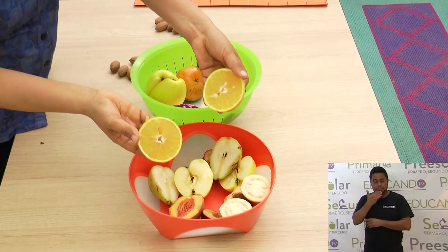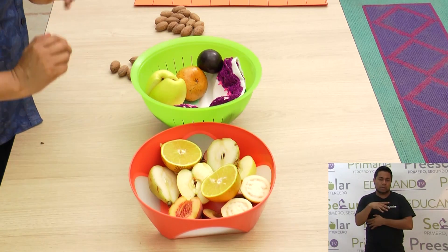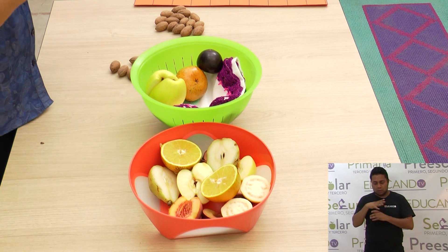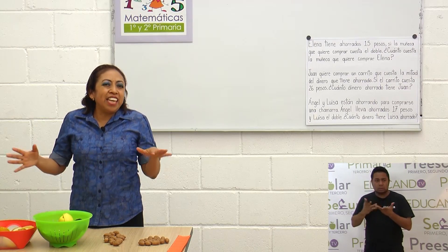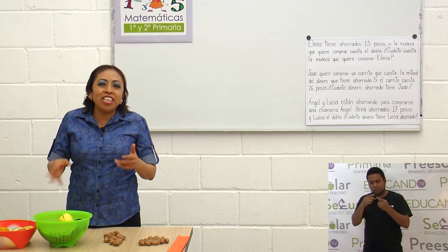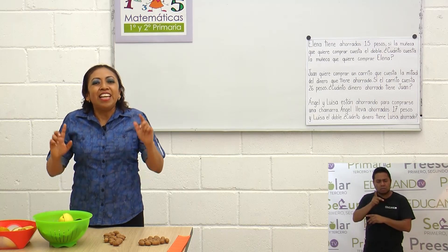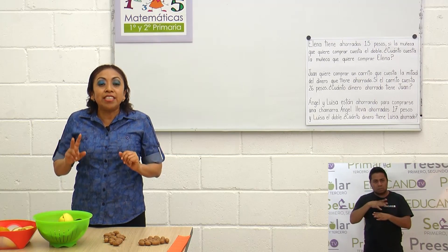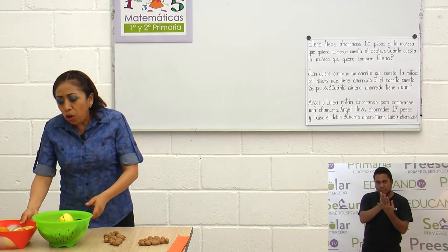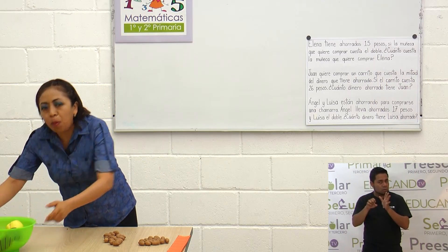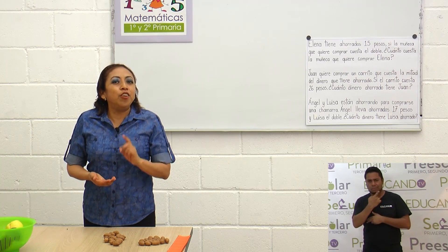Tenemos dos partes iguales, y aquí ya quedaron más frutas que están enteras. Puedes tú trabajar o cortar frutas de diferentes colores y sabores — hazlo en tu casa. Parte las frutas y vas a ver cómo salen dos partes iguales, y a cada parte se le llama mitad. Pero ¿a poco nada más vamos a trabajar mitades? La maestra dijo que también vamos a trabajar el doble.